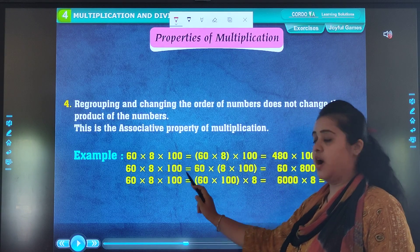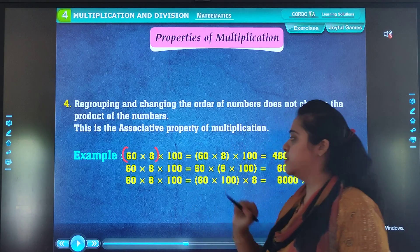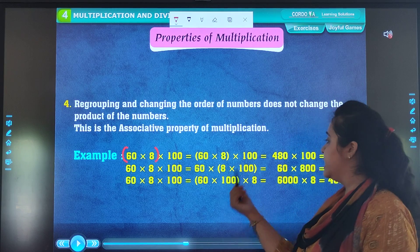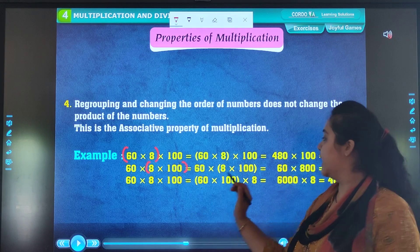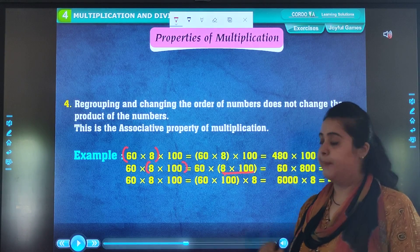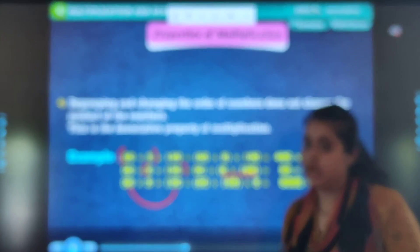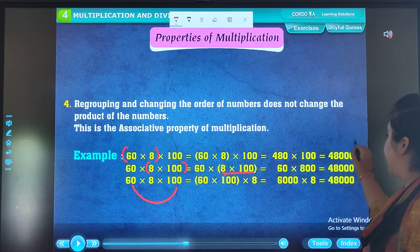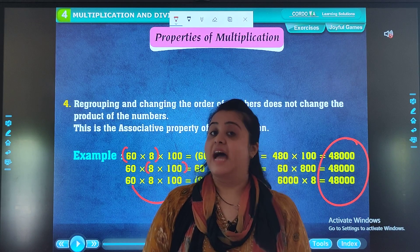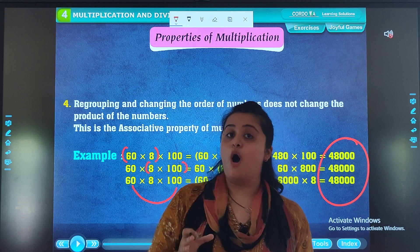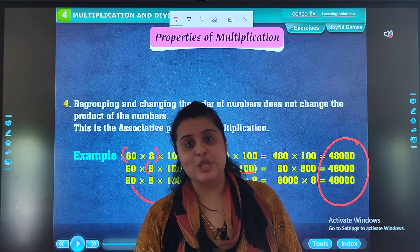60 into 8 into 100. What I did? 60 into 8, I grouped these two together, 100 separate. In second phase, what I did? 60 kept separate, 8 into 10 grouped together. But my answer was same in all the three cases. That means that regrouping or changing the place will not affect the answer of multiplication.